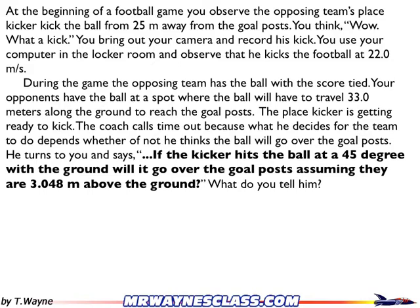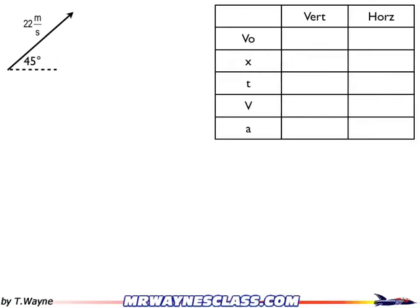So let's do some quick calculations here. I've got my table all set up with my givens for kinematics, and I have two accelerations, two lists of givens, one for the vertical, one for the horizontal.